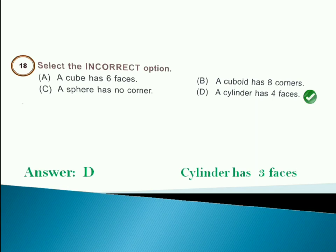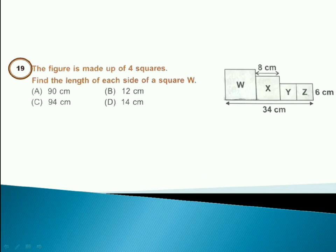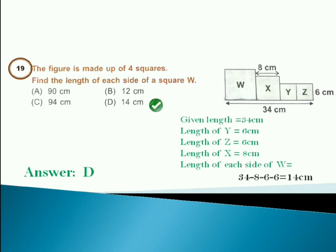The figure is made up of four squares. Find the length of each side of a square W. Answer is option D. Because given length is 34 centimeter. Length of Y is 6 centimeter. Length of Z is 6 centimeter. Length of X is 8 centimeter. Length of each side of W is 34 minus 8 minus 6 minus 6 is 14 centimeter.